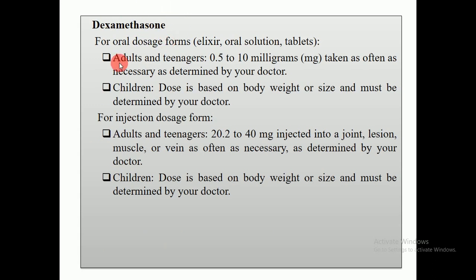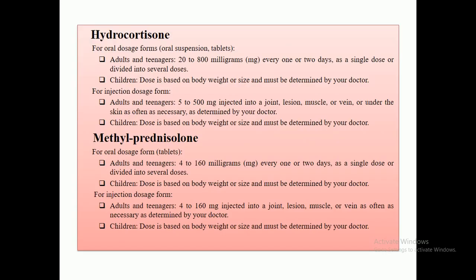Next is dexamethasone, another anti-inflammatory agent belonging to the corticosteroids. For oral dosage forms — elixir, oral solution, and tablet — for adults and teenagers, the dose is 0.5 to 10 mg taken as often as necessary as determined by the doctor. For children, the dose is based on body weight. For injection dosage forms for adults, the normal dose is 20 to 40 mg injected into joints, lesions, or muscles as often as necessary.